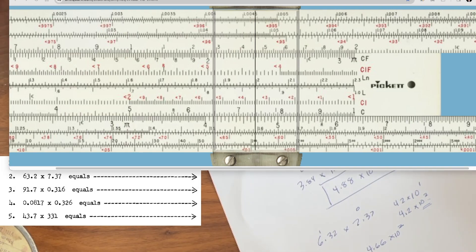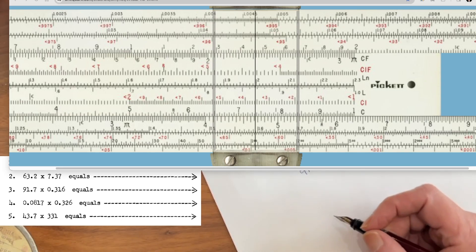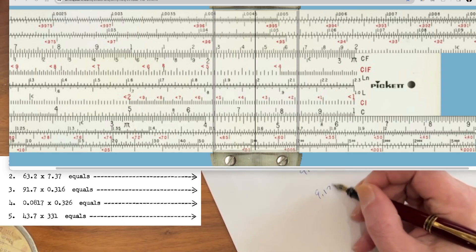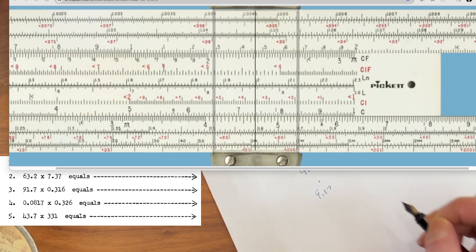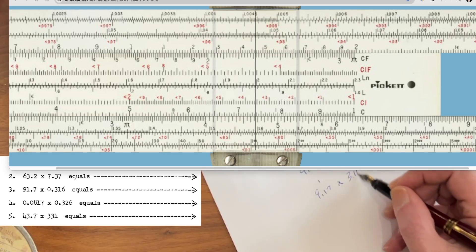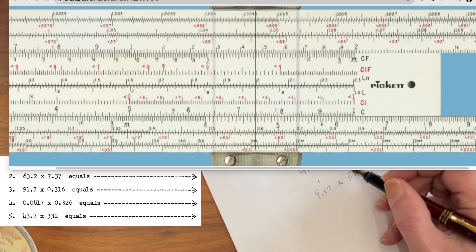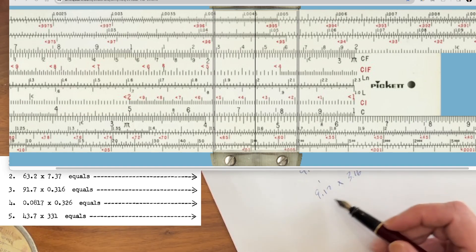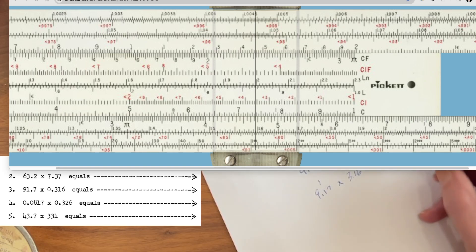Well, this is fun. Let's go ahead and go on to the next one. So what's our next one? 91.7. Well, that's 9.17 times 10 to the 1 times 3.16 times 10 to the negative 1. So our initial first look is 1 plus minus 1, it will be 10 to the 0. However, 9 times 3 is 27. So we're going to end up with an answer in the vicinity of 2.7 times 10 to the 1.